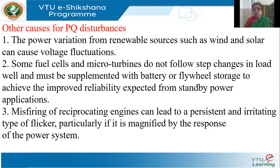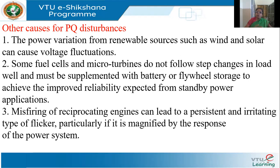There are other causes of concern for power quality. If we use wind and solar technology, which is dependent on the weather, we can have dynamically changing voltages based on varying wind speed or solar irradiation, which can cause voltage fluctuations. Microturbines and fuel cells do not follow a step change in load quickly — the transient period is large and they take time to reach steady state. Therefore, such technologies may have to be supplemented with battery or flywheel storage.